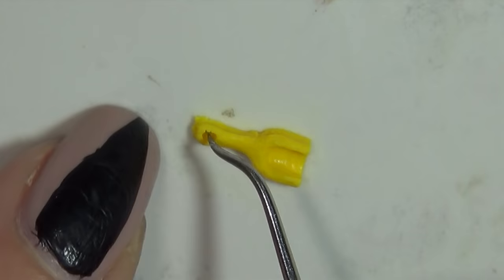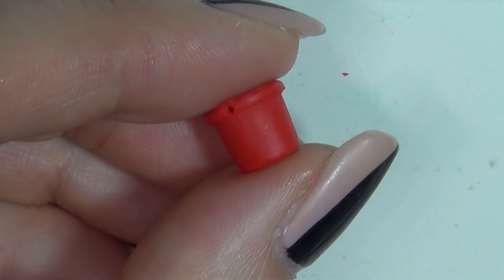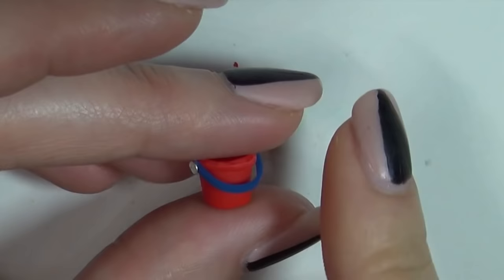When you're happy with the scoop, bake it along with the bucket pieces. After baking, remove the inside from the bucket, and then use the top of a few head pins to attach the handle.